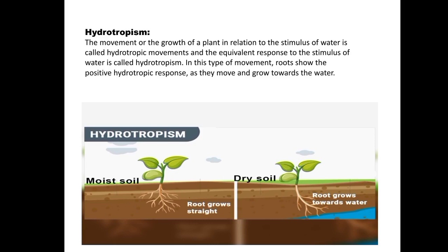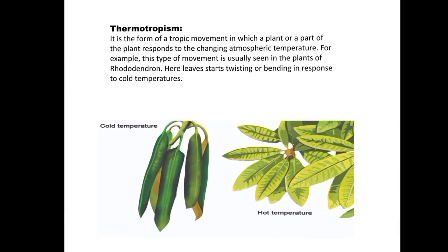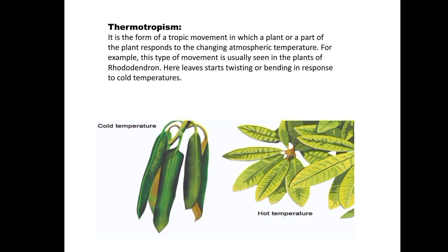Thermotropism refers to growth movements regulated by temperature. For example, the peduncles of Anemone nemorosa grow in response to heat from the sun, and curvature of plant parts towards a normal temperature from high or very low temperature is termed thermotropism. In summary, tropic movements include phototropism, geotropism, chemotropism, thigmotropism, hydrotropism, and thermotropism — all growth movements which occur in the direction of the stimulus.